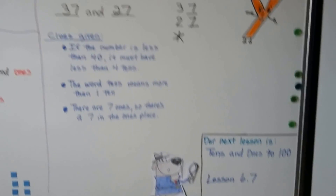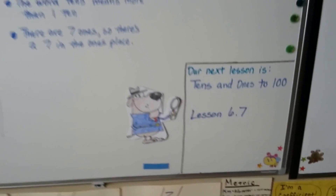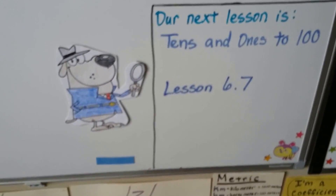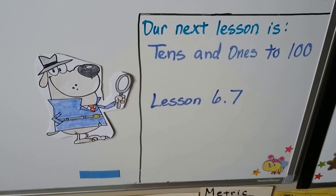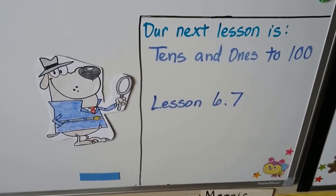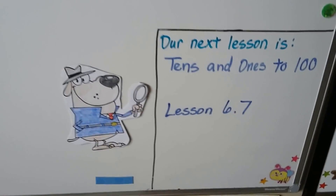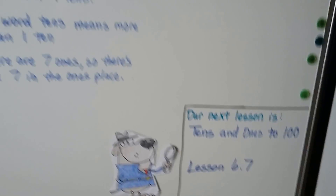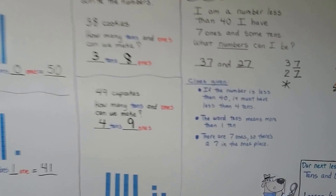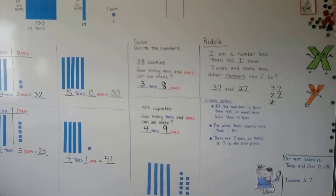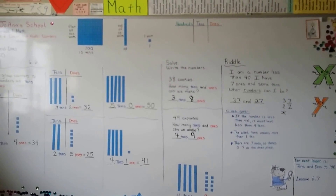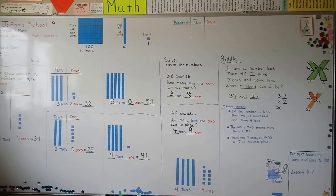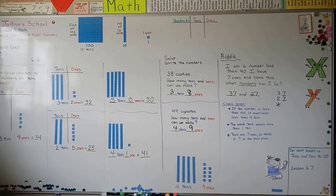Our next lesson is going to be about tens and ones to 100. That's lesson 6.7. We're moving along through chapter 6. I hope you have a great day, and I'll see you next time. Bye.